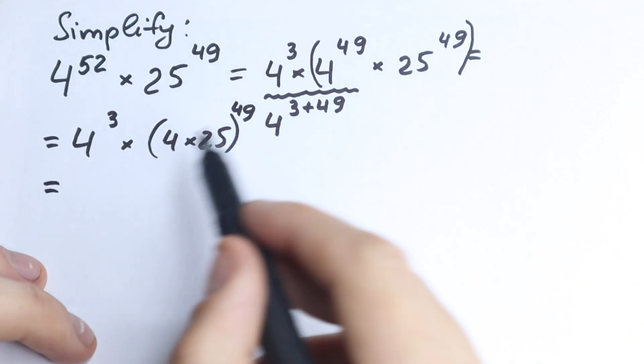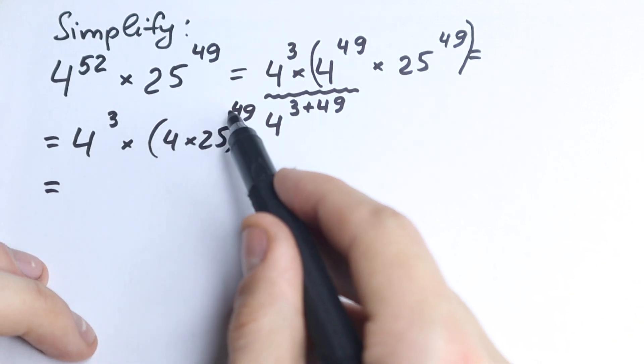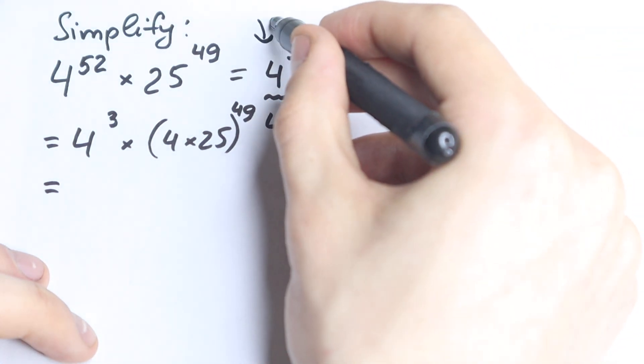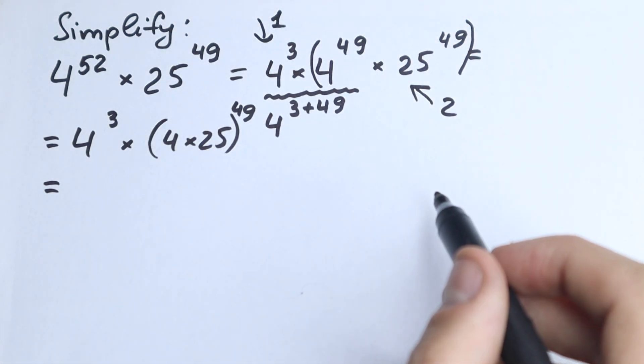So let's write it right here. I hope you understand this step. 4 cubed times 4 times 25 in parentheses to the power 49. This is our first step right here. This is our second step. So I hope you understand this step.